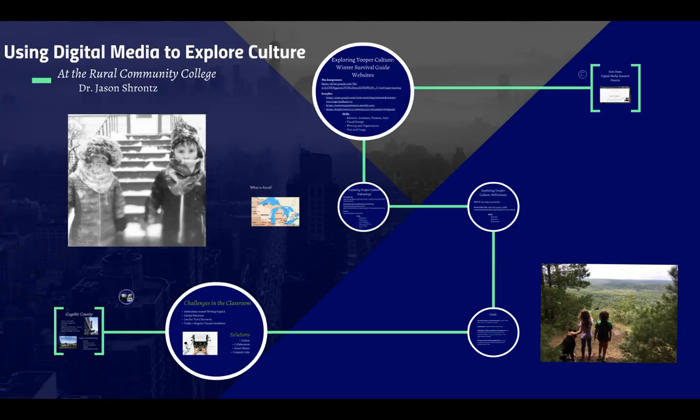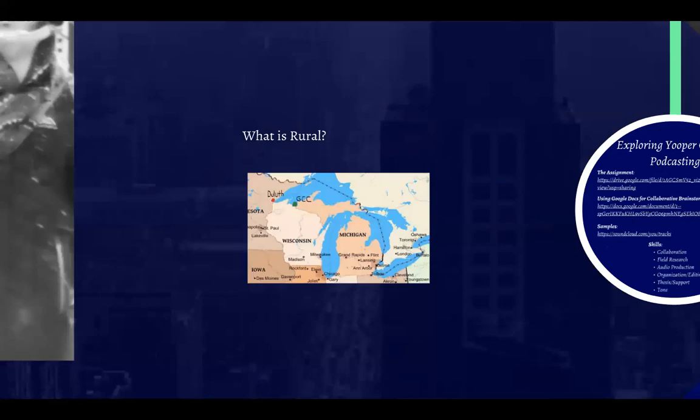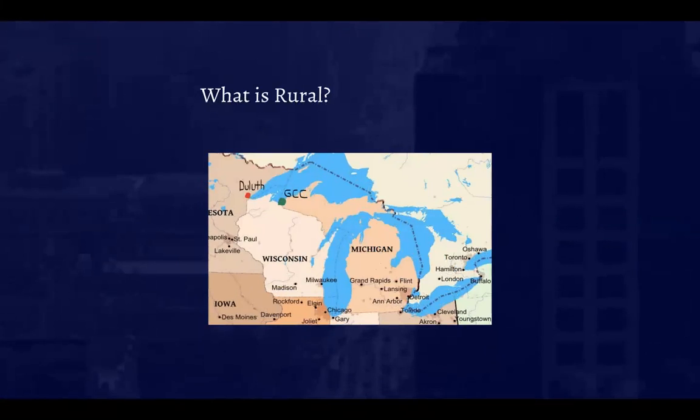Moving from the University of Rhode Island to a small rural community college was a big transition, so it's important to define what 'rural' means. Gogebic Community College is in Ironwood, Michigan — the farthest western spot of the Upper Peninsula. If someone from Michigan uses their hand to point out where they are, we're so far we're not even locatable on the hand.